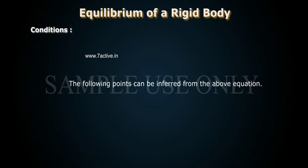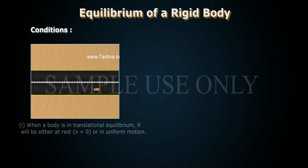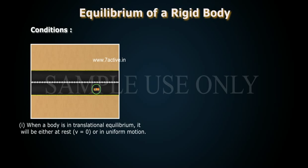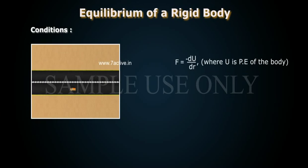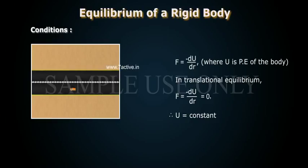The following points can be inferred from the above equation. When a body is in translational equilibrium, it will be either at rest (v = 0) or in uniform motion. The body will have zero linear acceleration if F = −dU/dr, where U is the potential energy of the body. In translational equilibrium, F = −dU/dr = 0, therefore U = constant.